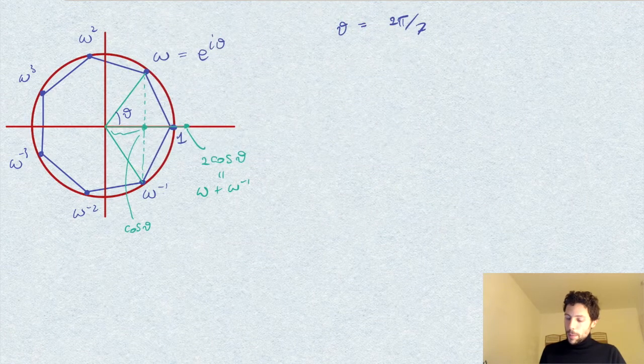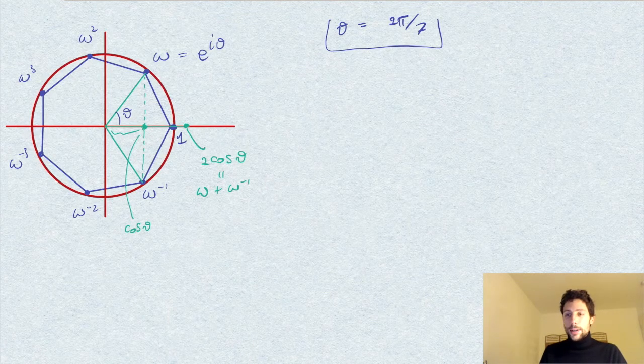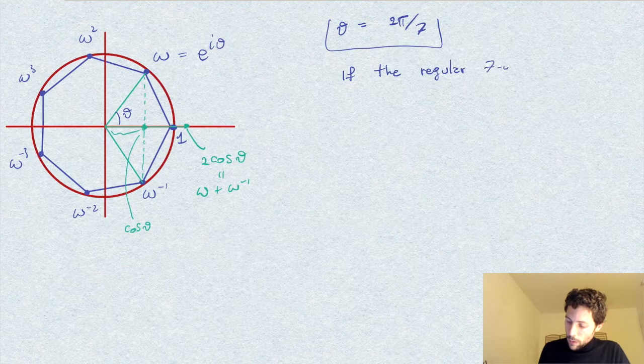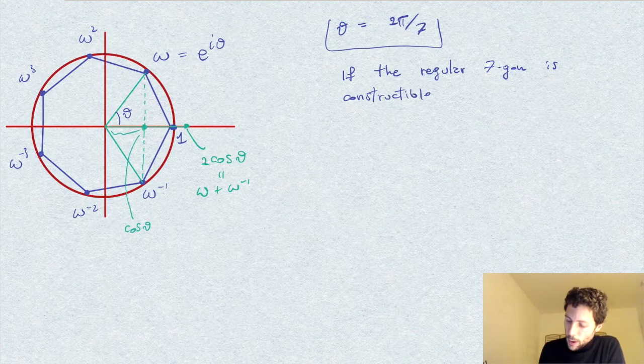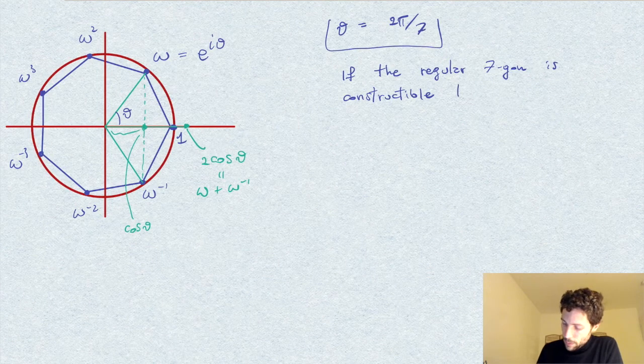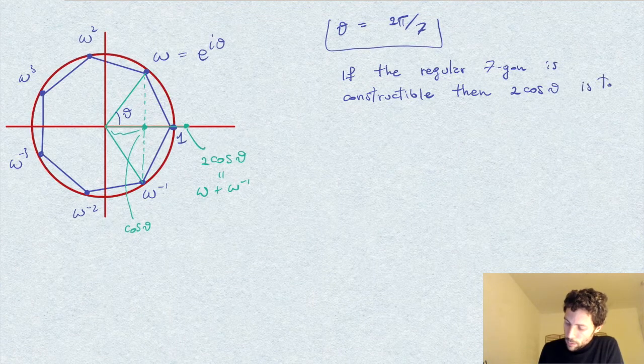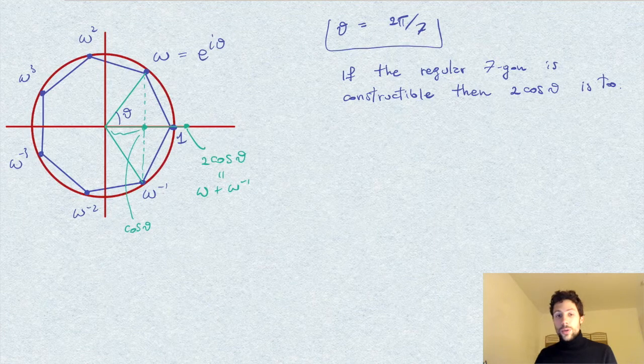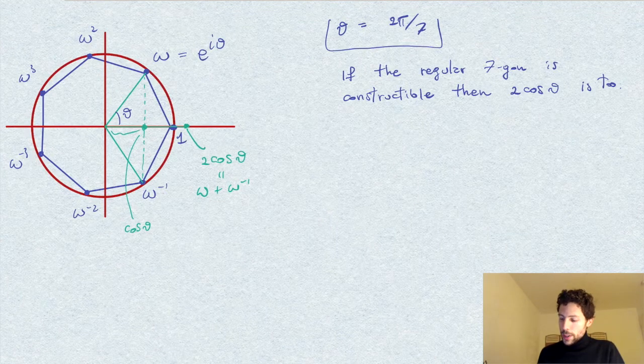The basic observation here is that if the regular heptagon is constructible, also this number 2cos(theta) is constructible. So our strategy would be to prove that this is not the case, that 2cos(theta) is not constructible.